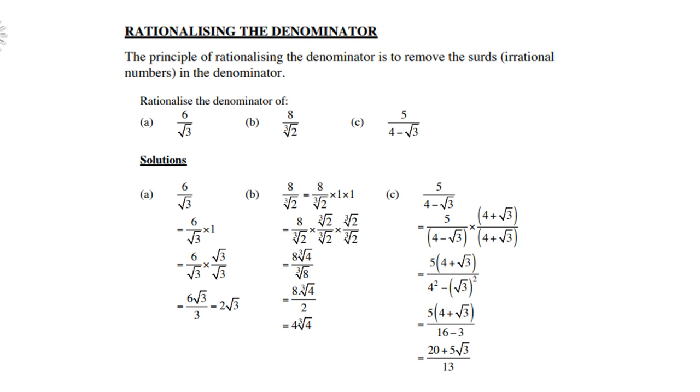Then you multiply the two numerators: 6 times square root 3. Multiply the two denominators: square root 3 times square root 3 is 3. Then 3 into 6 twice, and the answer is 2 times square root of 3.